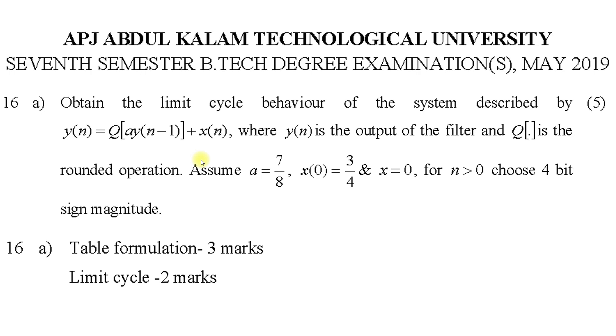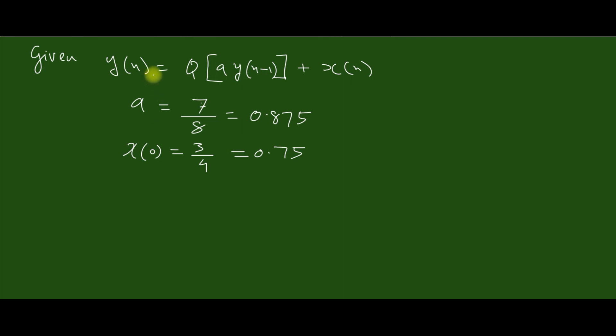The only thing is it is an iterative method where you have to be careful about the conversion from binary to decimal and decimal to binary. To solve this problem, the given values are y(n) = Q[a·y(n-1)] + x(n), where a = 7/8 = 0.875, and x(0) = 3/4 = 0.75.